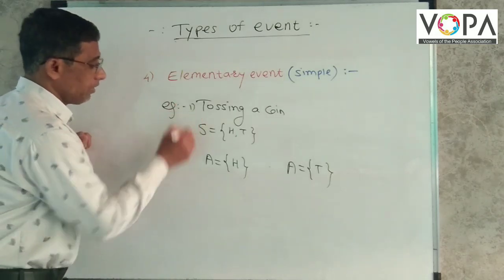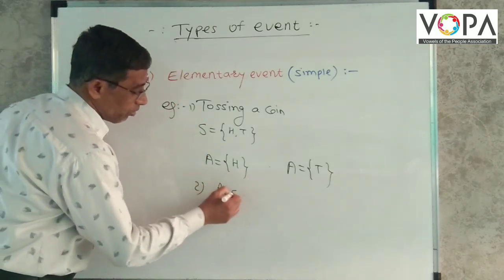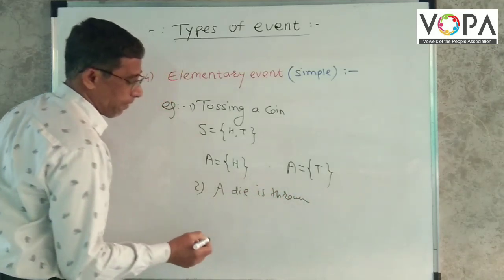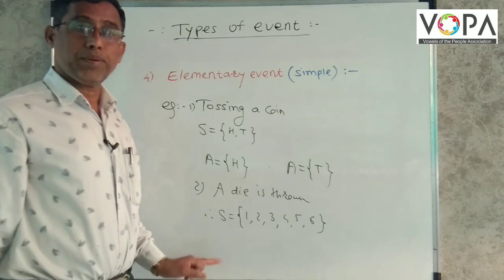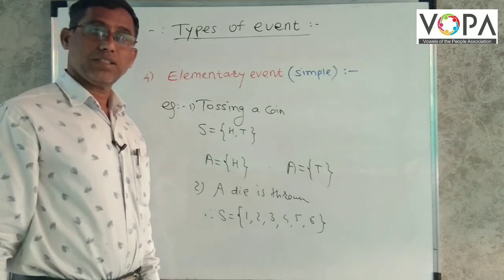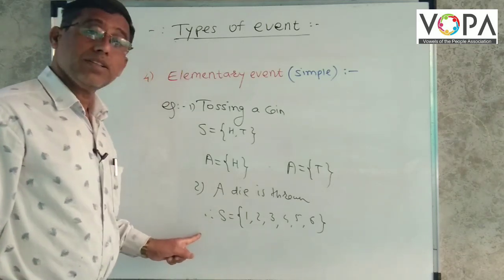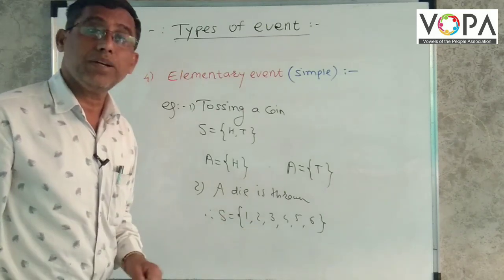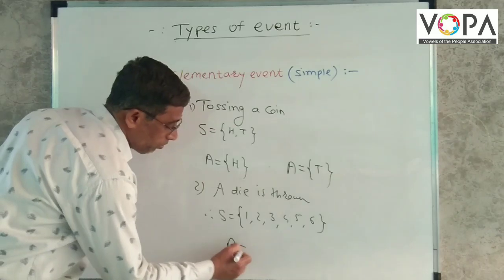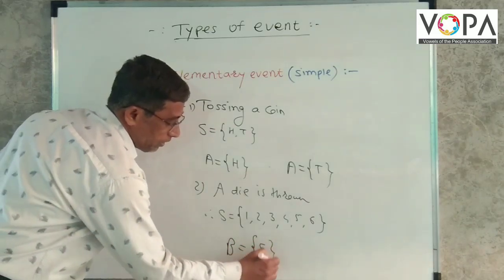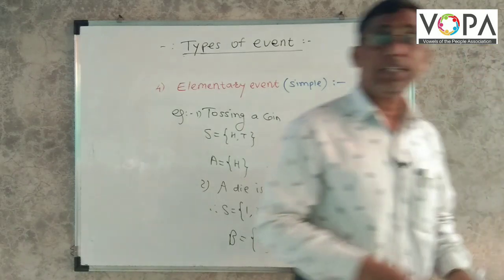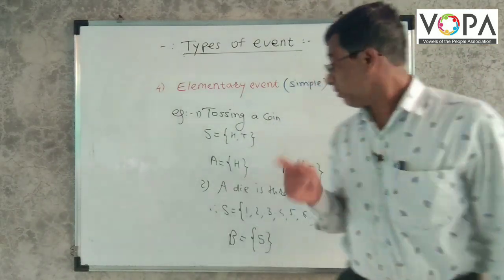Second example, a die is thrown. This is the sample point 1, 2, 3, 4, 5, 6. Let B be an event of getting a number which is divisible by 5. Then what we get? B is equal to 5. This is an elementary event.